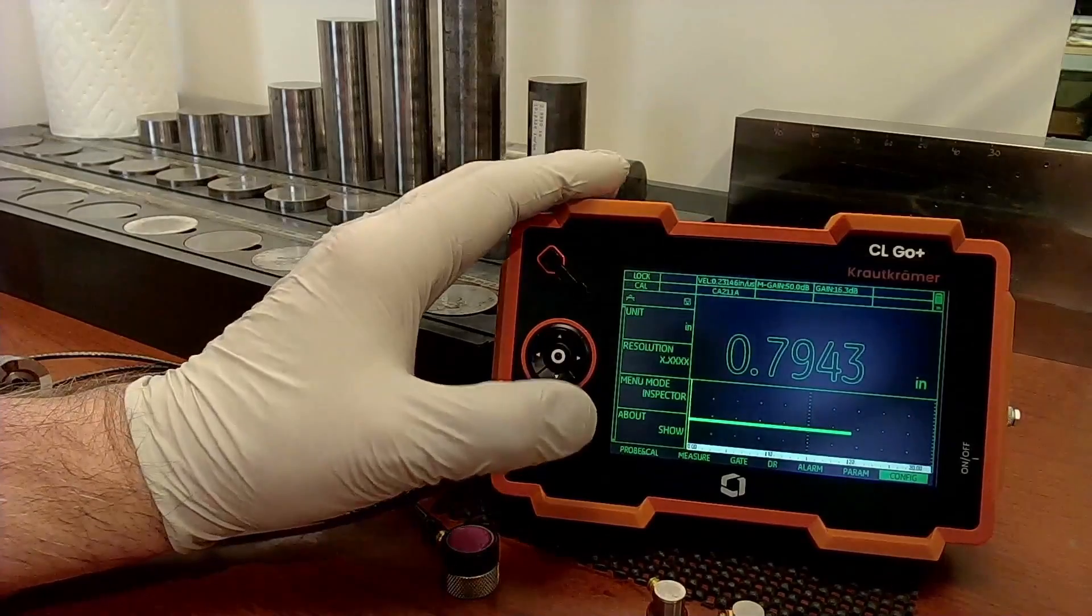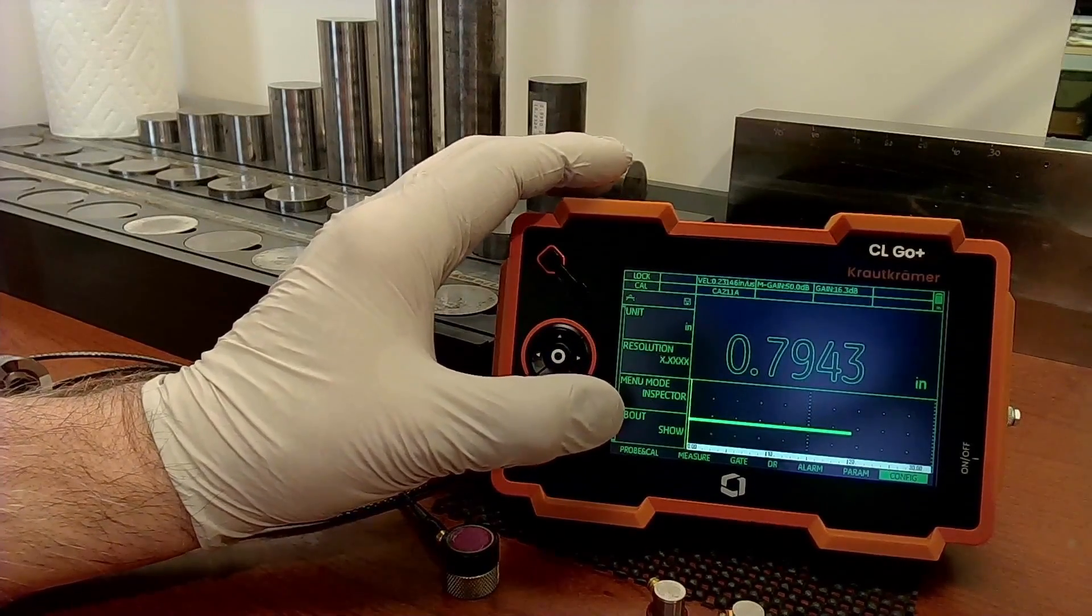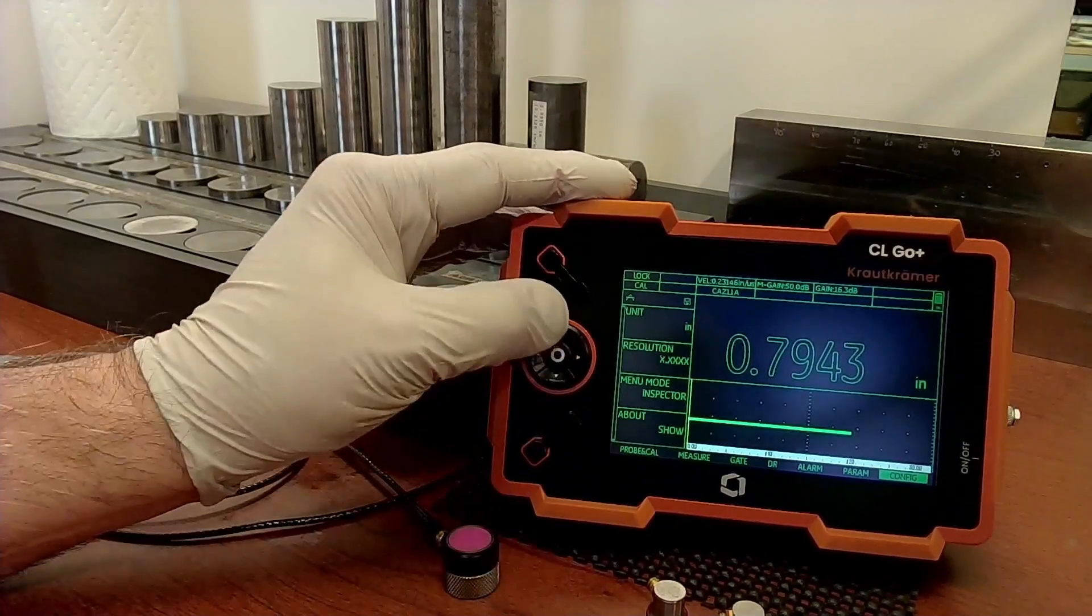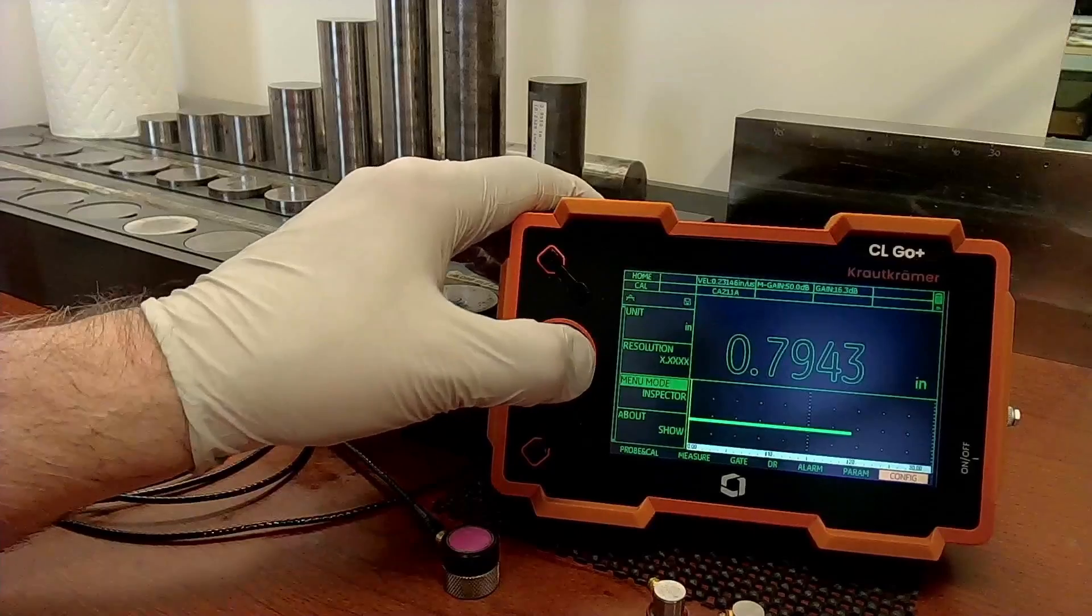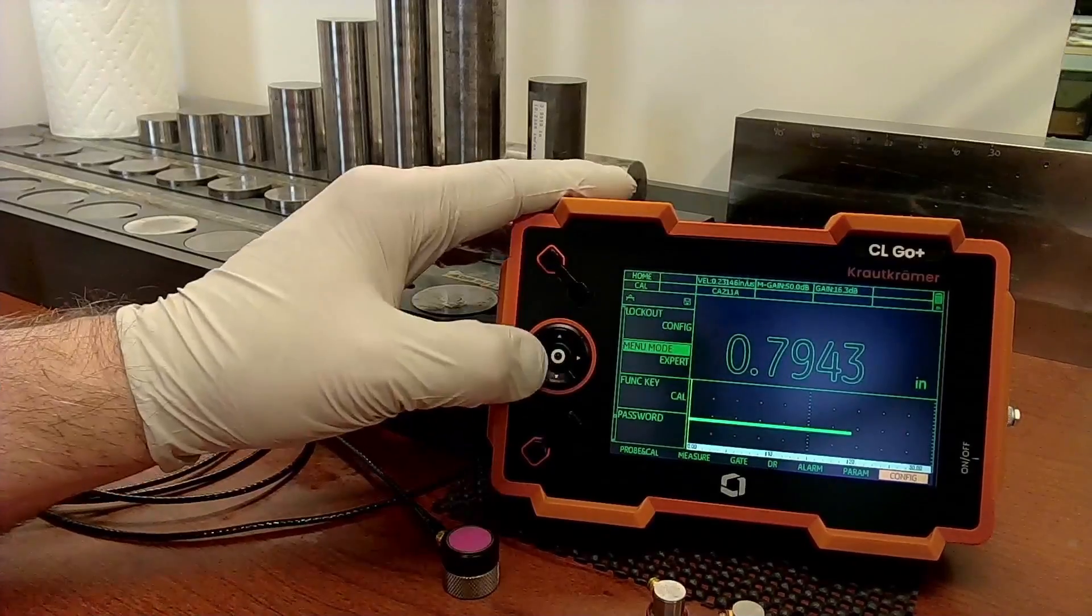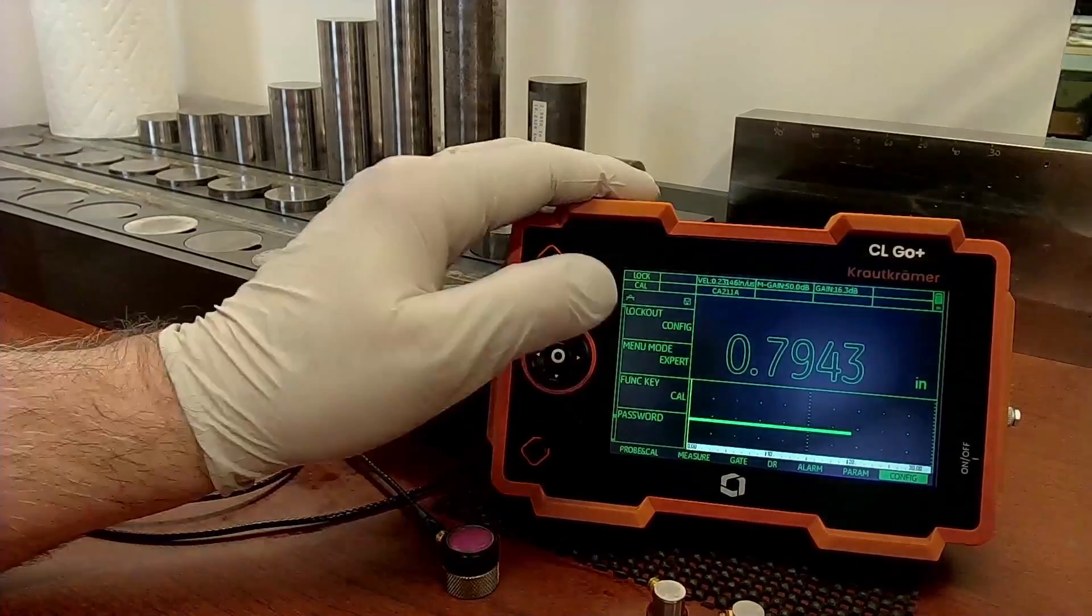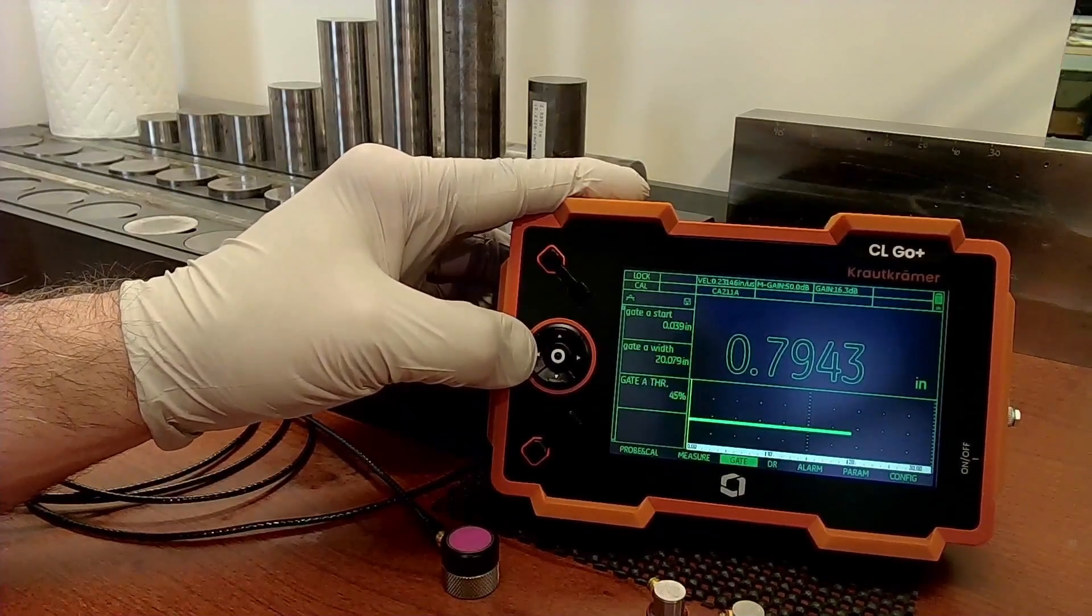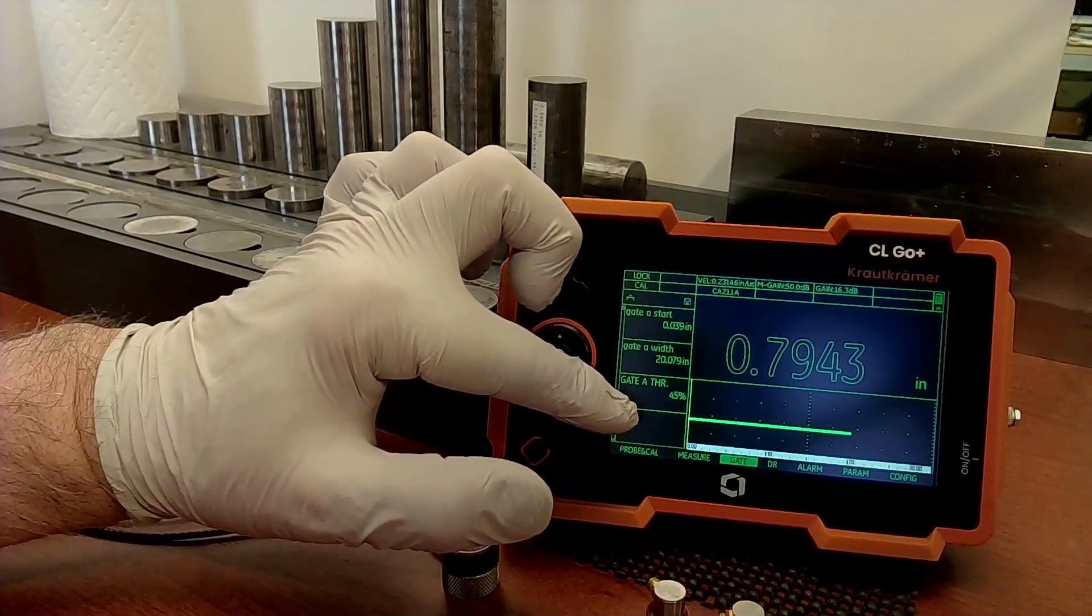Because all of the gating and gain control is available to an expert user for adjustment, if we come to the config menu and activate the expert mode, now in expert mode, there are a great many more menu items available to the user. For instance, in inspector mode, the gate menu is completely blank.